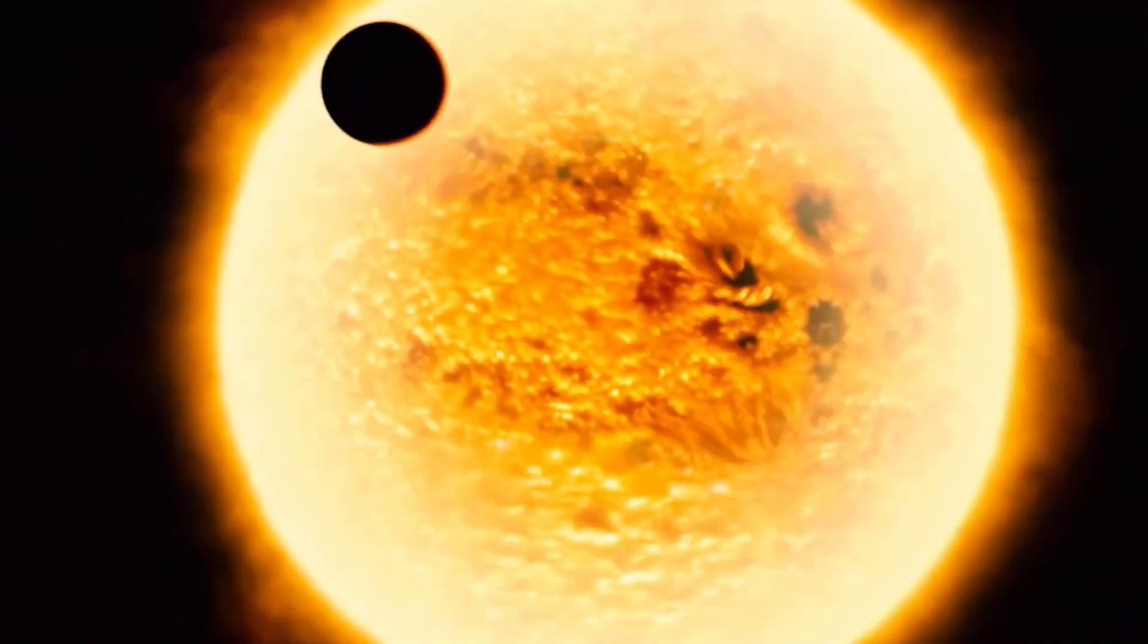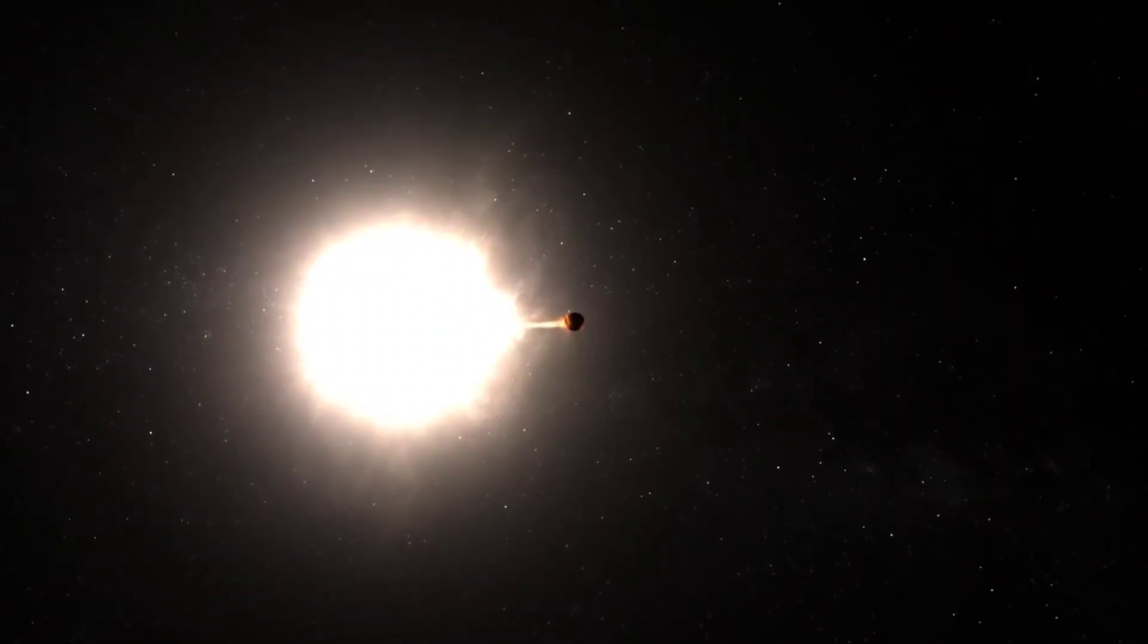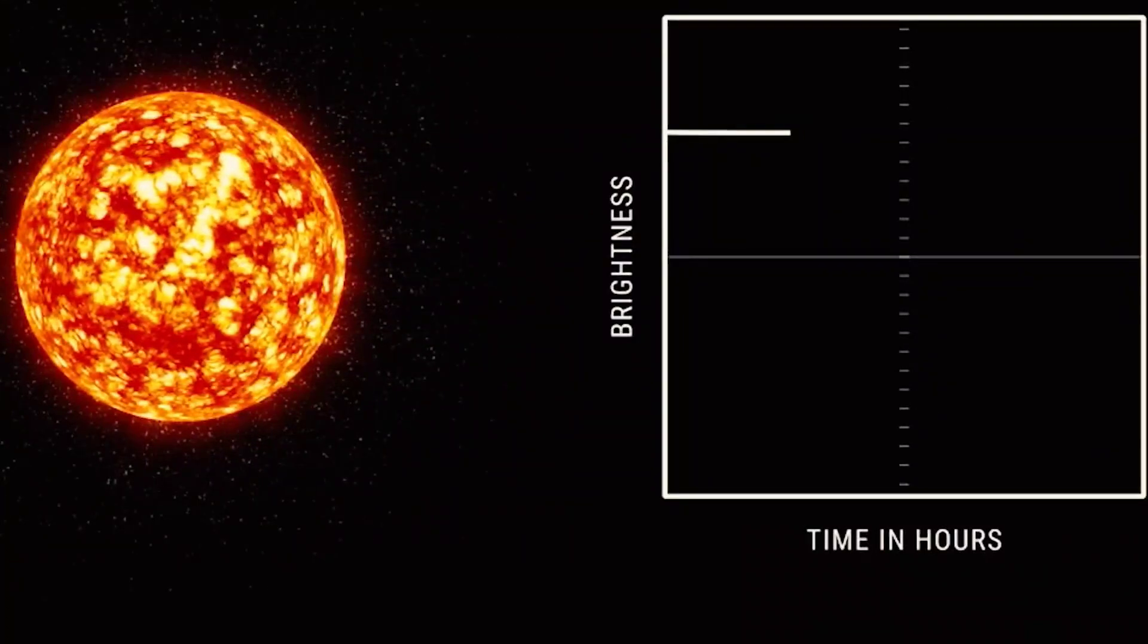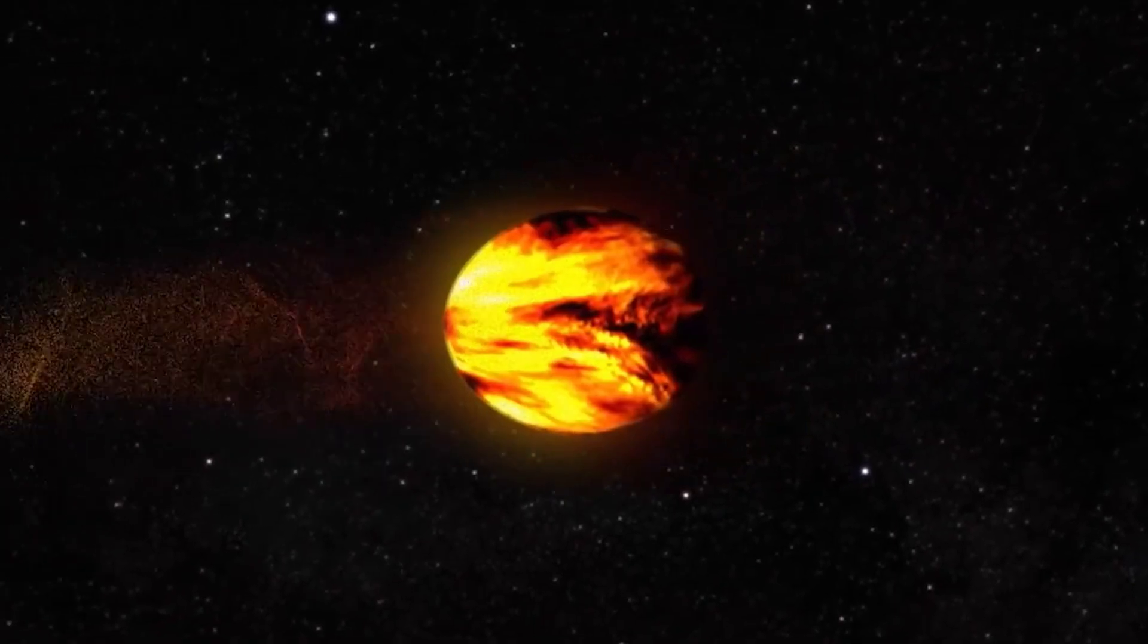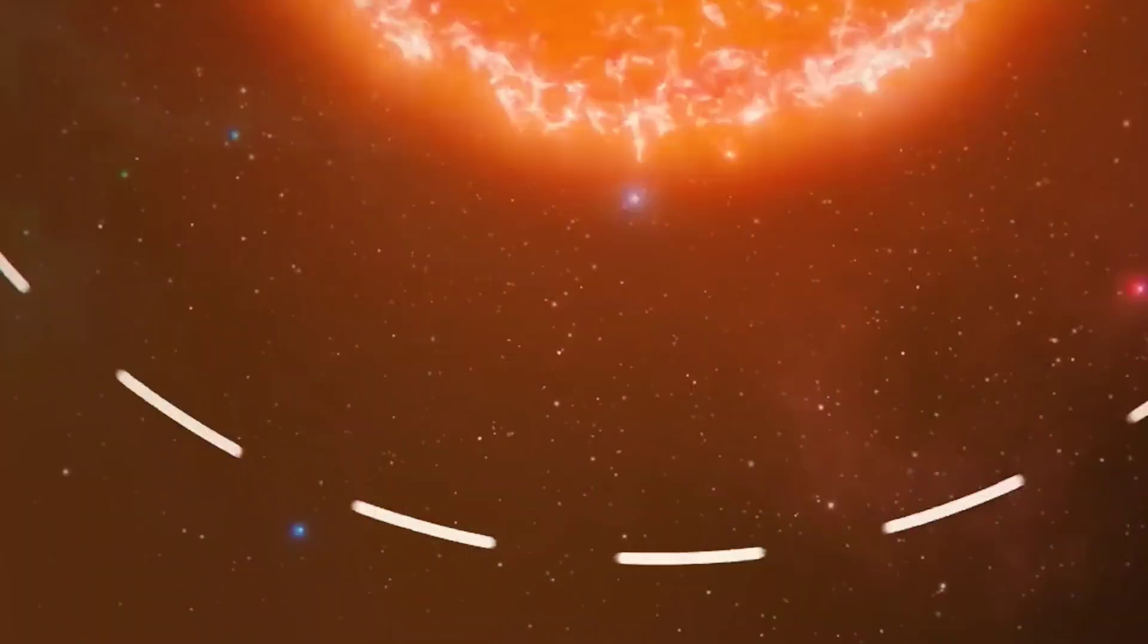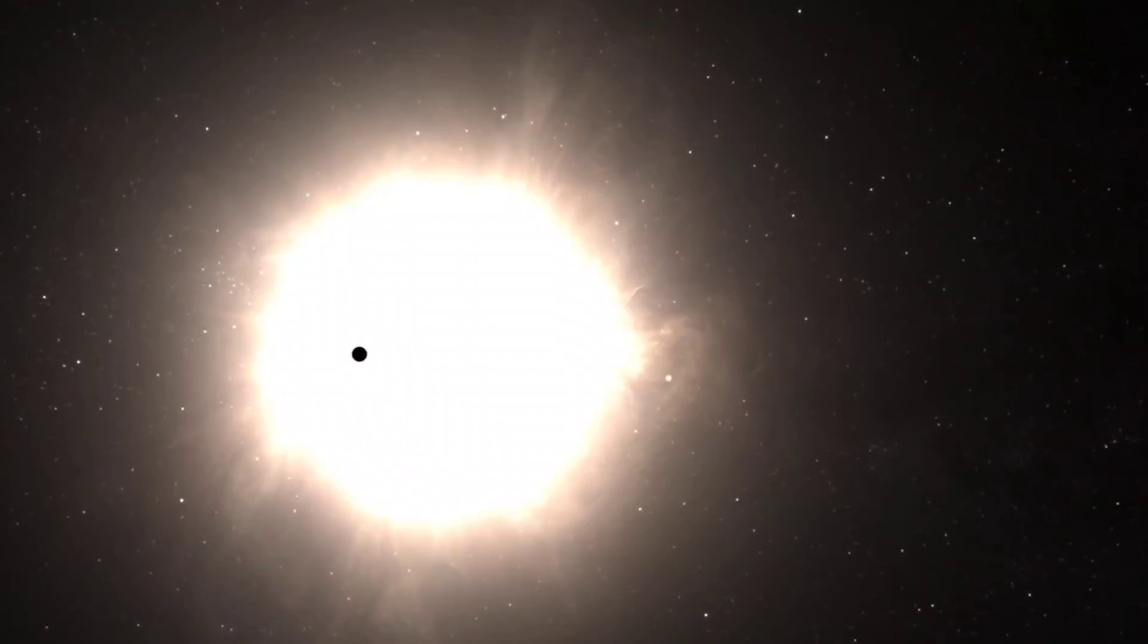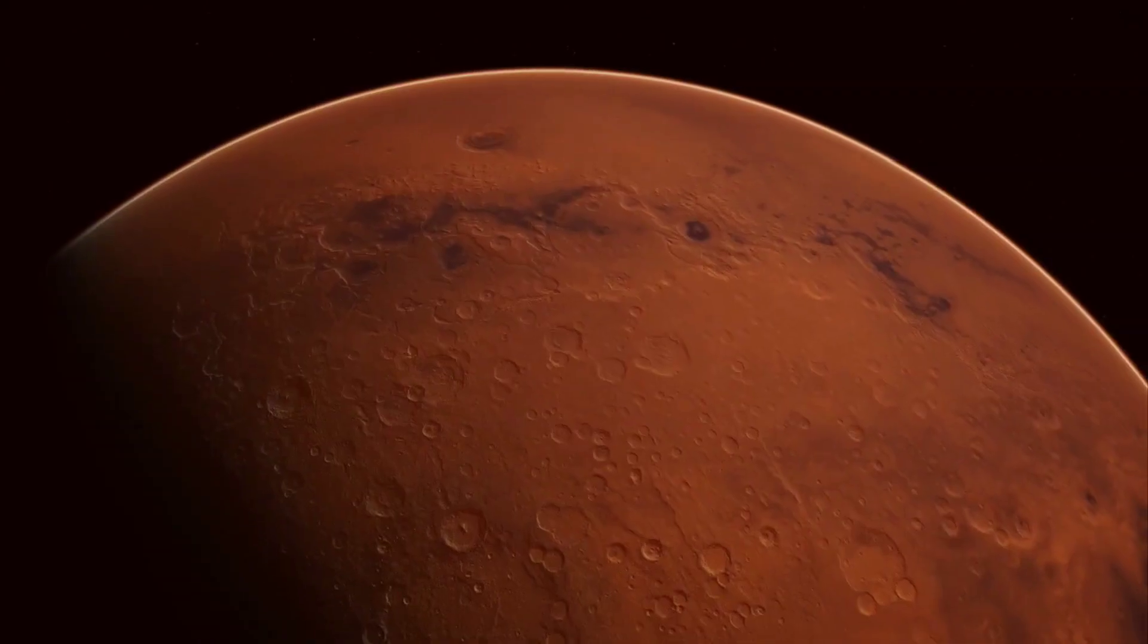This exoplanet's extreme temperature is one of the features that makes Wasp-12b very terrifying. It is so close to its host star that it completes a full orbit in only 1.1 Earth days, resulting in an unimaginably hot temperature that can surge to 2,700 degrees Celsius or 4,892 degrees Fahrenheit. This proximity to its host star classifies Wasp-12b as a hot Jupiter.